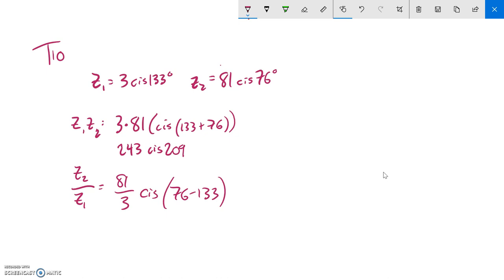Dividing is a subtraction. So 81 divided by 3, that's 27. And then I have 76 minus 133, and that's negative 57. I could leave it as negative 57 degrees if I wanted to. I like to leave them positive, so I'm just going to add it to 360 to get 303. Either one of these answers work for me.